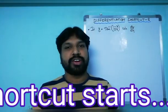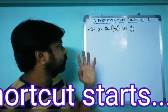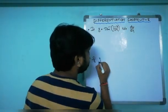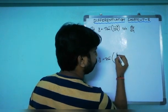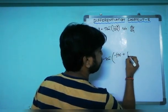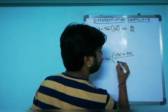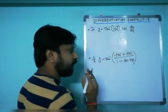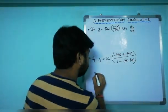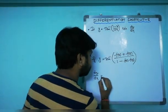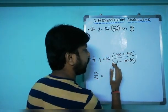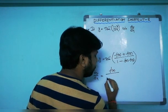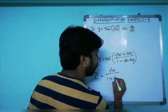Now I want to reveal the shortcut. For questions of the form y equals tan⁻¹((f(x) plus f(y)) divided by (1 minus f(x) times f(y))), then dy/dx is very easy to find. Whatever f(x) is, apply the derivative: f′(x) divided by (1 plus f(x) squared).